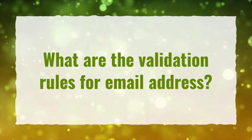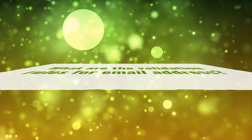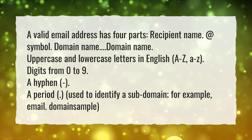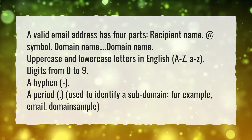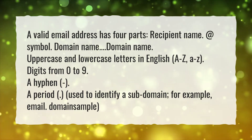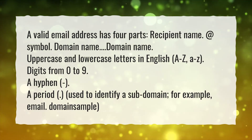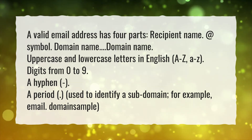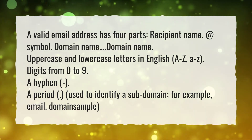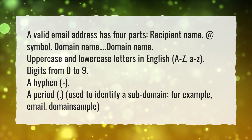What are the validation rules for email address? A valid email address has four parts: recipient name, at symbol, domain name. Allowed characters include uppercase and lowercase letters in English (A to Z), digits from 0 to 9, a hyphen, and a period — used to identify a subdomain.